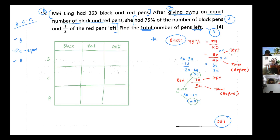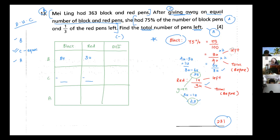My black total (before) is 8 units and my red total (before) is 3 units. For the after row: black left over is 6 units and red left over is 1 unit.